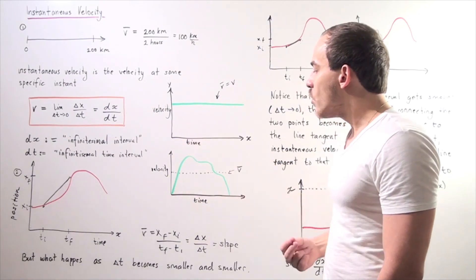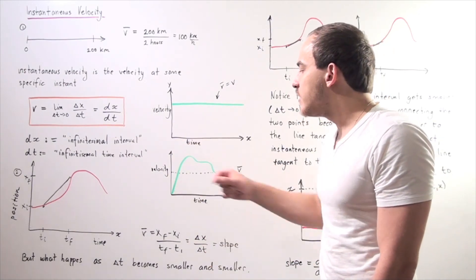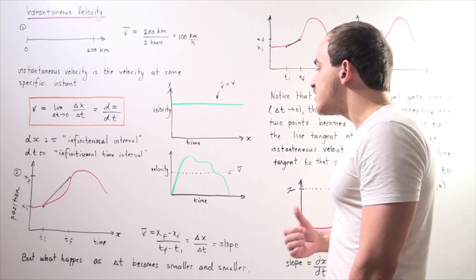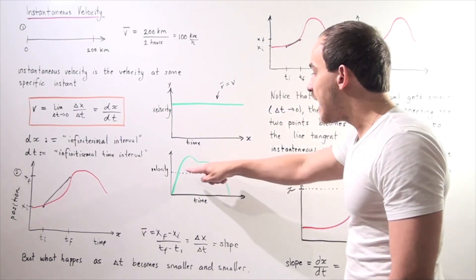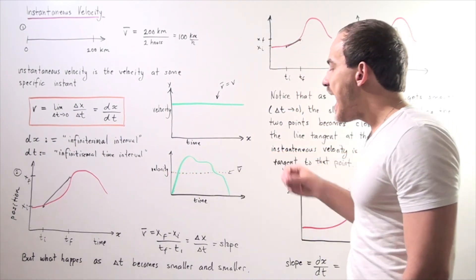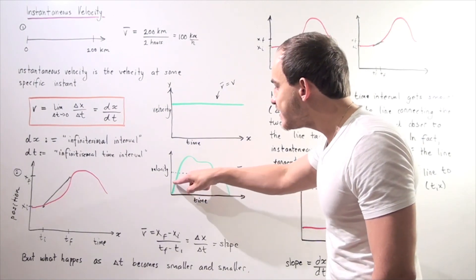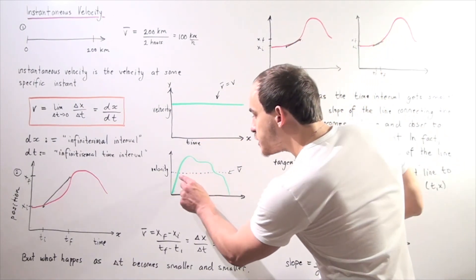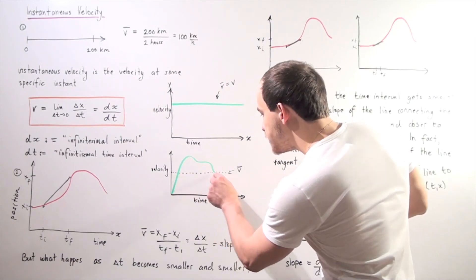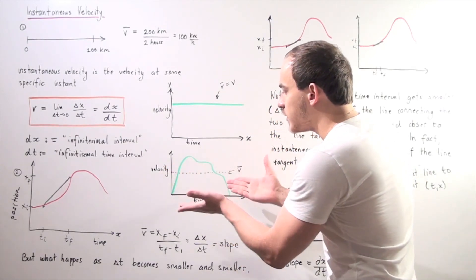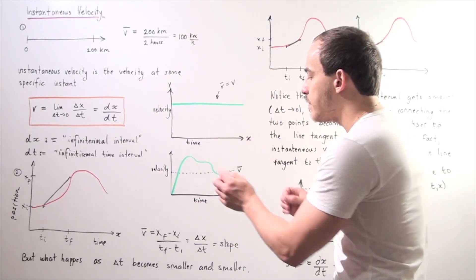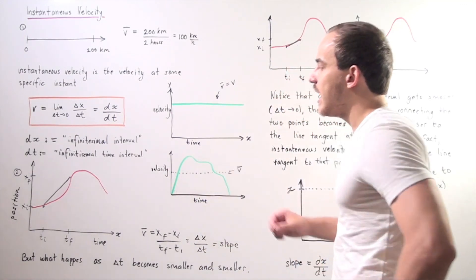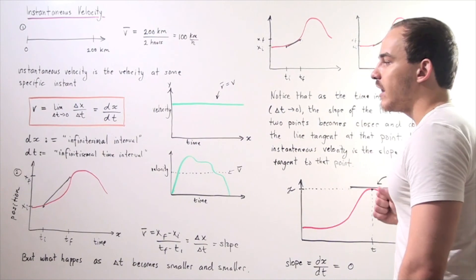But suppose instead, when I was driving, my velocity varied. That means, although on average my velocity might be somewhere here, at any given point my velocity might be different from my average velocity. Although at this point and this point my velocity and average velocity are exactly the same, for most of the points the instantaneous velocity and average velocity have different values.